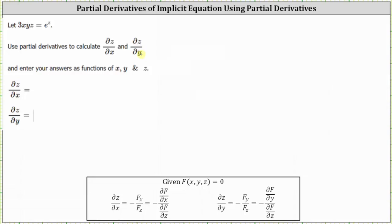If we write the given equation in the form of F(x, y, z) equals zero, then we can find the partial of z with respect to x by determining the opposite of the partial of F with respect to x divided by the partial of F with respect to z. And we can find the partial of z with respect to y by determining the opposite of the partial of F with respect to y divided by the partial of F with respect to z.